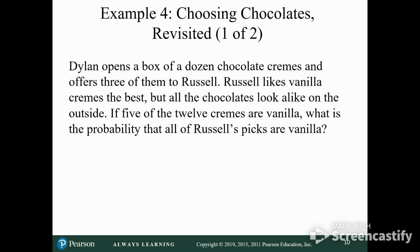Alright. Choosing chocolates. Dylan opens a box of chocolates and offers three of them to Russell. Russell likes vanilla the best, but all the chocolates look alike on the outside. If 5 of the 12 creams are vanilla, what's the probability that all of Russell's are vanilla? So he picks out how many of them? Three of them. So the first pick, he's got a 5 in 12 chance of it being vanilla. His second pick of a cream, if it's vanilla, then he's got a 4 out of 11 chance of getting a vanilla. And then if that one's vanilla, then he's got a 3 out of 10 chance of the third one being vanilla.